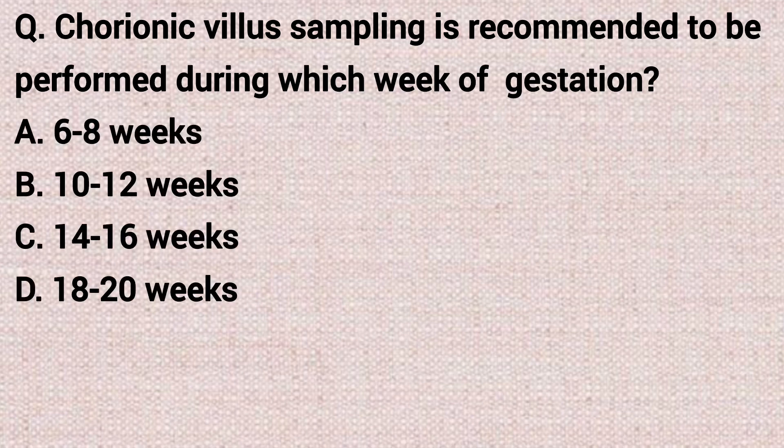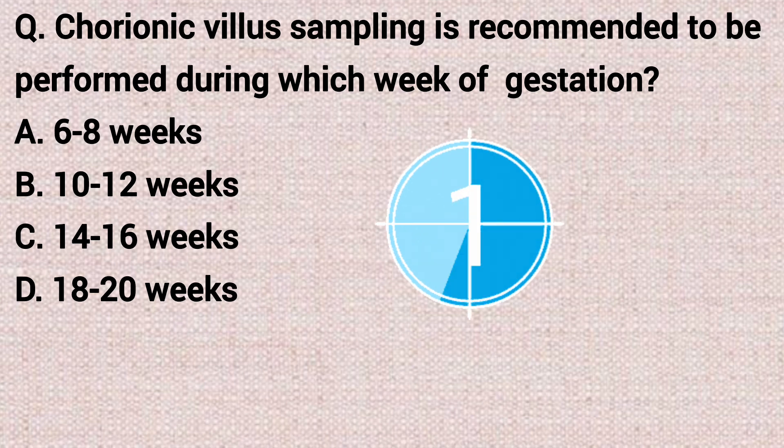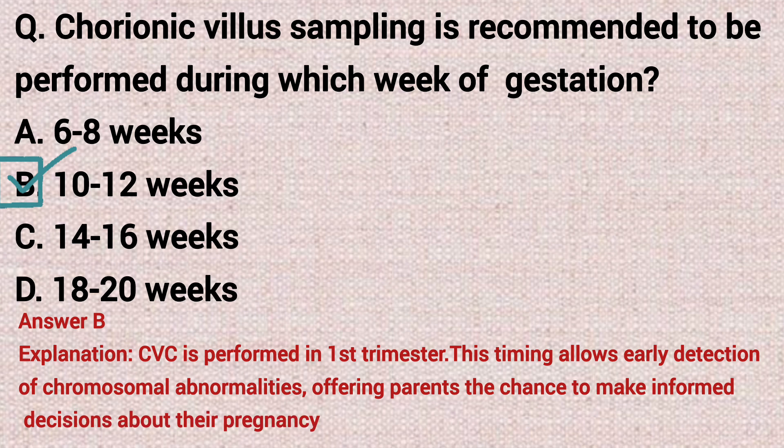The next question: chorionic villus sampling is recommended to be performed during which week of gestation? Option A: six to eight weeks. Option B: ten to twelve weeks. Option C: fourteen to sixteen weeks. Option D: eighteen to twenty weeks. The correct answer is option B, ten to twelve weeks.